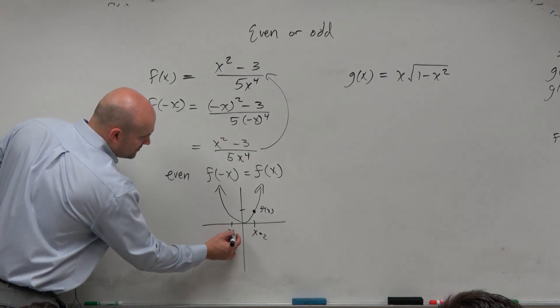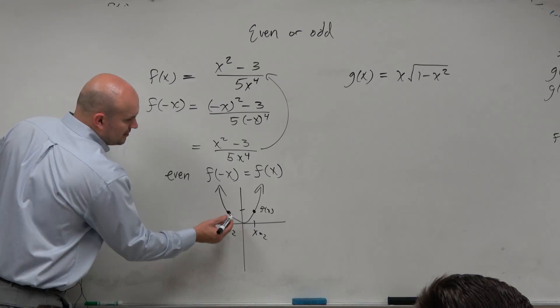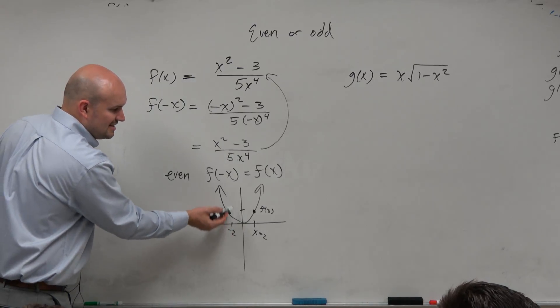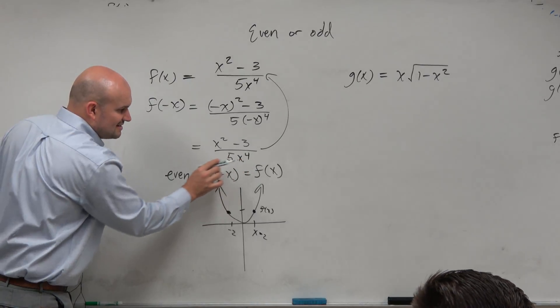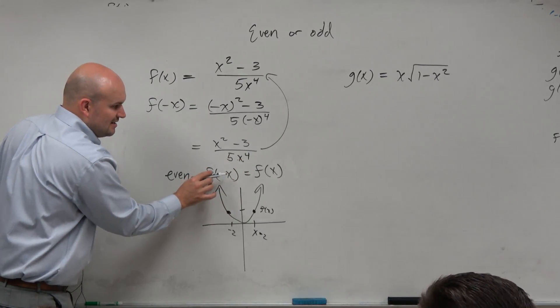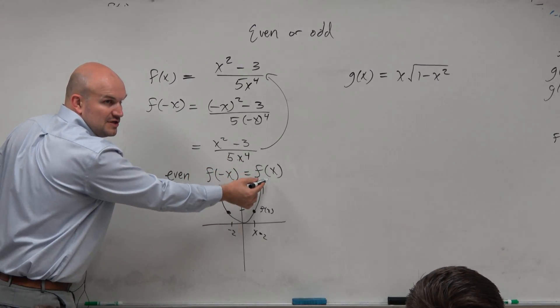And then, what about if I did negative 2? Is equal to 4. Do you guys see how they both share the same values, right? So f of x is equal to f of negative x. f of negative 2 is equal to f of 2, right?